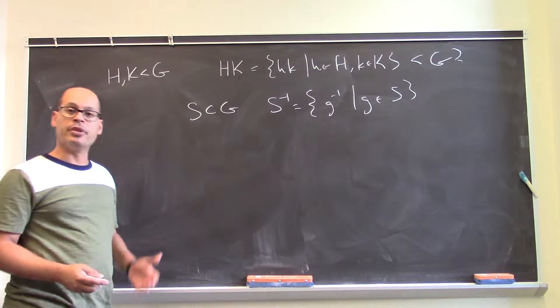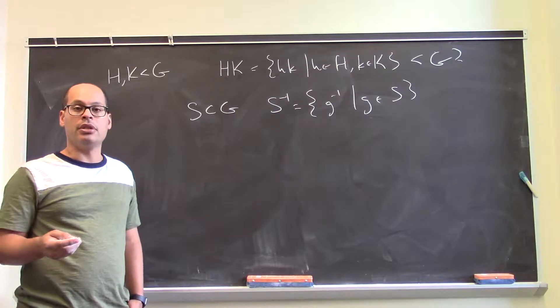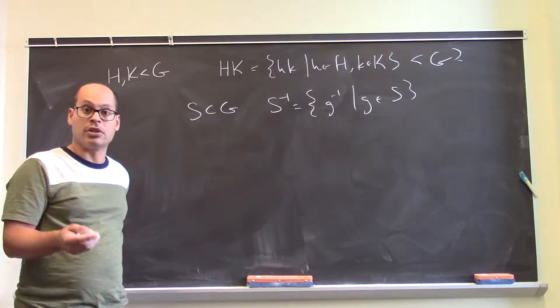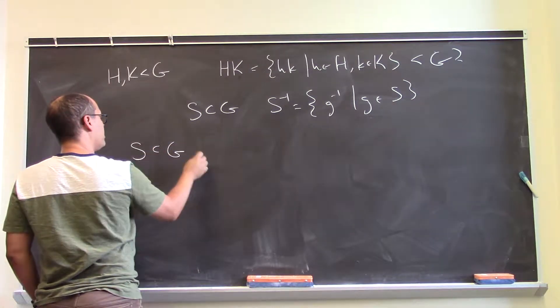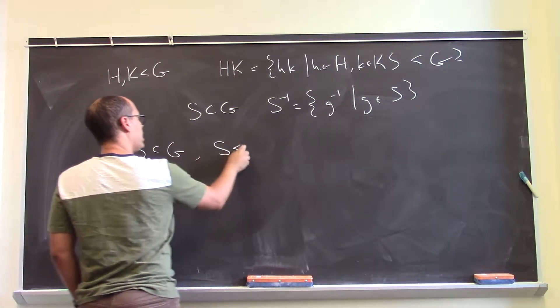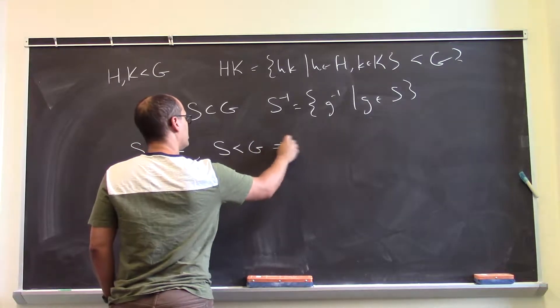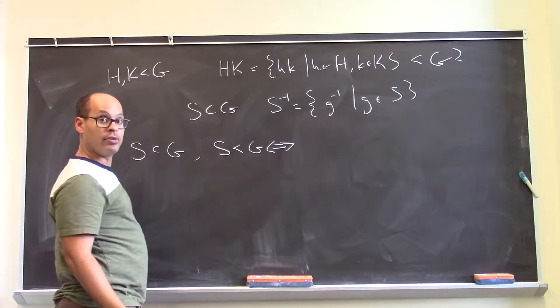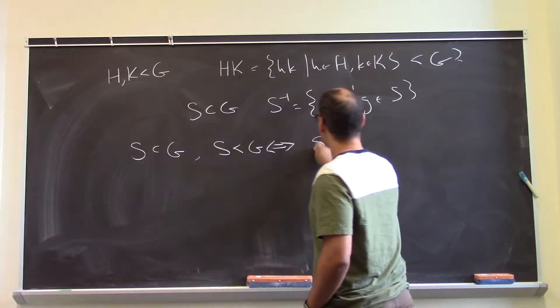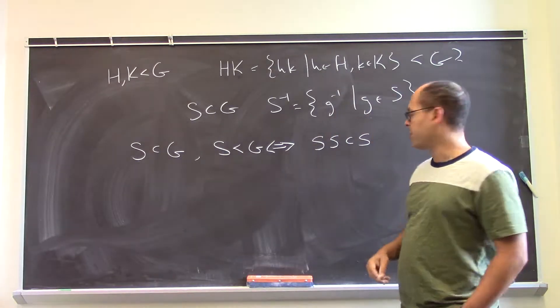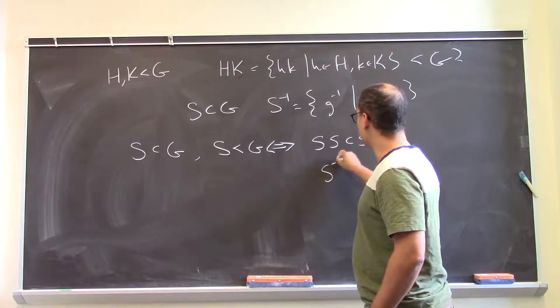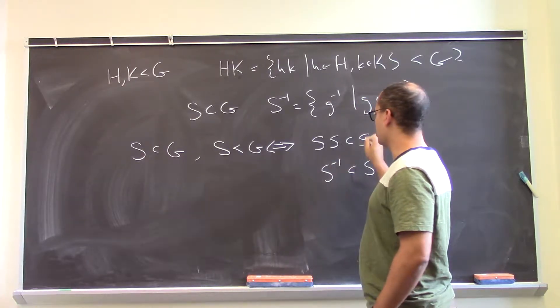Well, a subgroup is something that's closed under the basic group operations, multiplication and inversion. So if I have a subset in the group, then S actually is a subgroup if and only if, closed under multiplication. So if I look at products of two things in S, I'm back in S. And if I do inverses of things in S, those are also back in S.